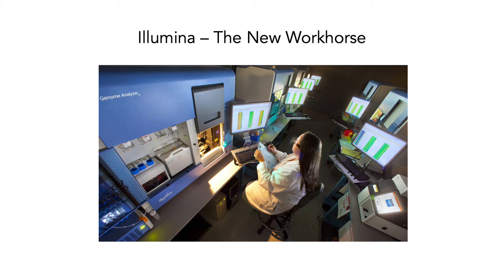Just like the factories with Sanger sequencing machines, Illumina machines are now the new workhorse. You can go into big sequencing centers and they will have a lot of Illumina machines lined up, just like in this image — lots of machines doing the job. The difference is that each of these machines now churns out huge amounts of DNA sequence data — vastly more than that entire factory would have been able to do for Sanger sequencing. The idea is very similar; the amount of DNA generated is much, much bigger.